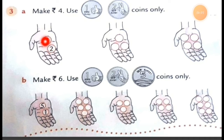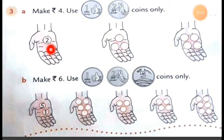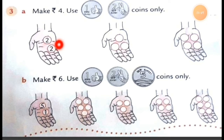This example is already done for us. If we have 2 coins and we have to make rupees 4, which two coins are we using? To make rupees 4, we are using two coins of rupees 2. So, 2 plus 2 is equal to 4. Now, the first one is done.